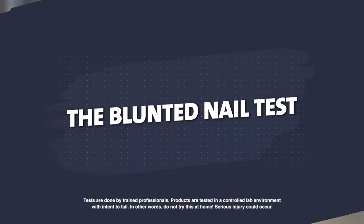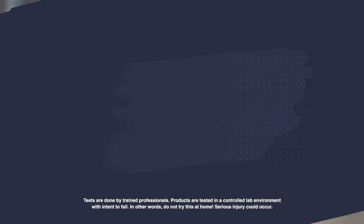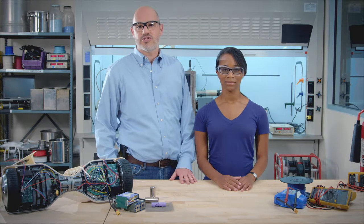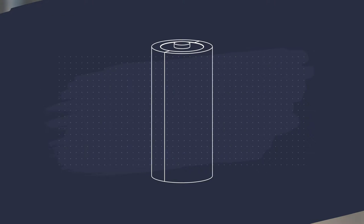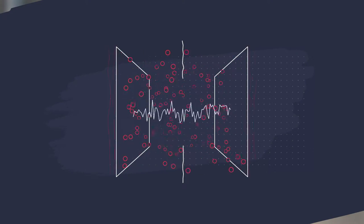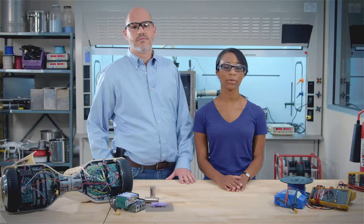The blunted nail test tells us how the battery responds to something denting its protective cover seriously enough to cause an internal short circuit. Lithium-ion cells have the potential to develop internal short circuits over time, which can cause thermal runaway and lead the battery to catch fire or explode.